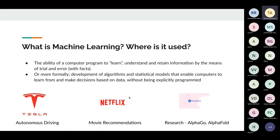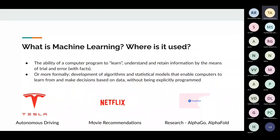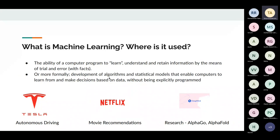Traditional programs are always well-defined, whereas in machine learning there's always learning happening. More formally, machine learning is a way of combining computer science and mathematics — writing algorithms and statistical and mathematical models to enable computers to learn and make decisions based on their learnings.